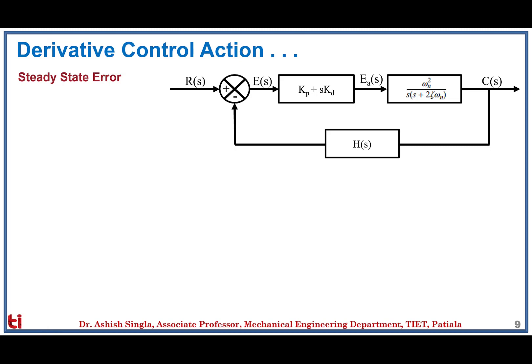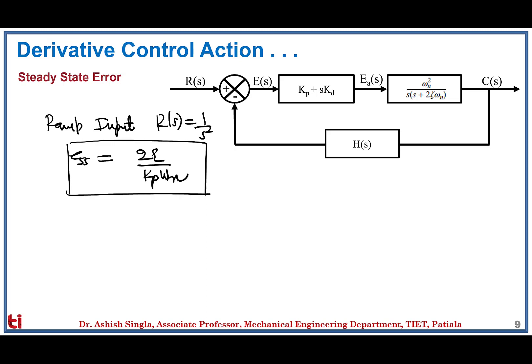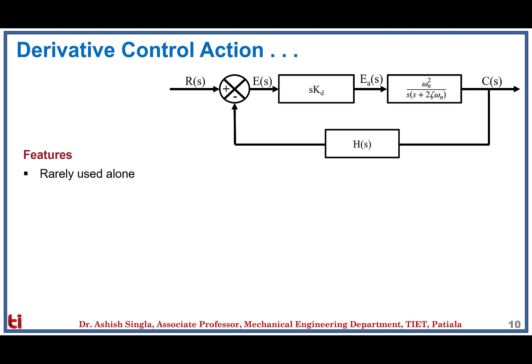Regarding steady state error for derivative control: the derivative control is typically not used alone, so its steady state error is calculated combined with proportional control, forming a PD controller, which we will see in the next session. For a ramp input where R(s) = 1/s², the steady state error turns out to be the same as the proportional controller: 2ζ / (KP·ωn). The KD gain has no effect on the steady state error, showing that derivative control action has no bearing on steady state error.